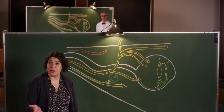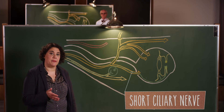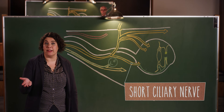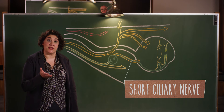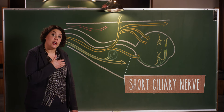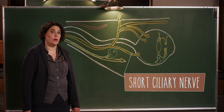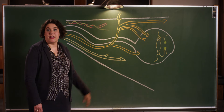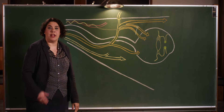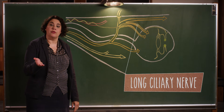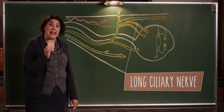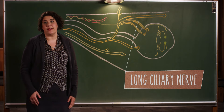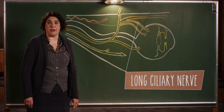Sympathetic fibers to the eyeball are postganglionic. They originate in the superior cervical ganglion at the base of the skull and follow the arteries into the orbit. They hop off the artery onto these ciliary branches and follow them into the eyeball to reach dilator pupillae.